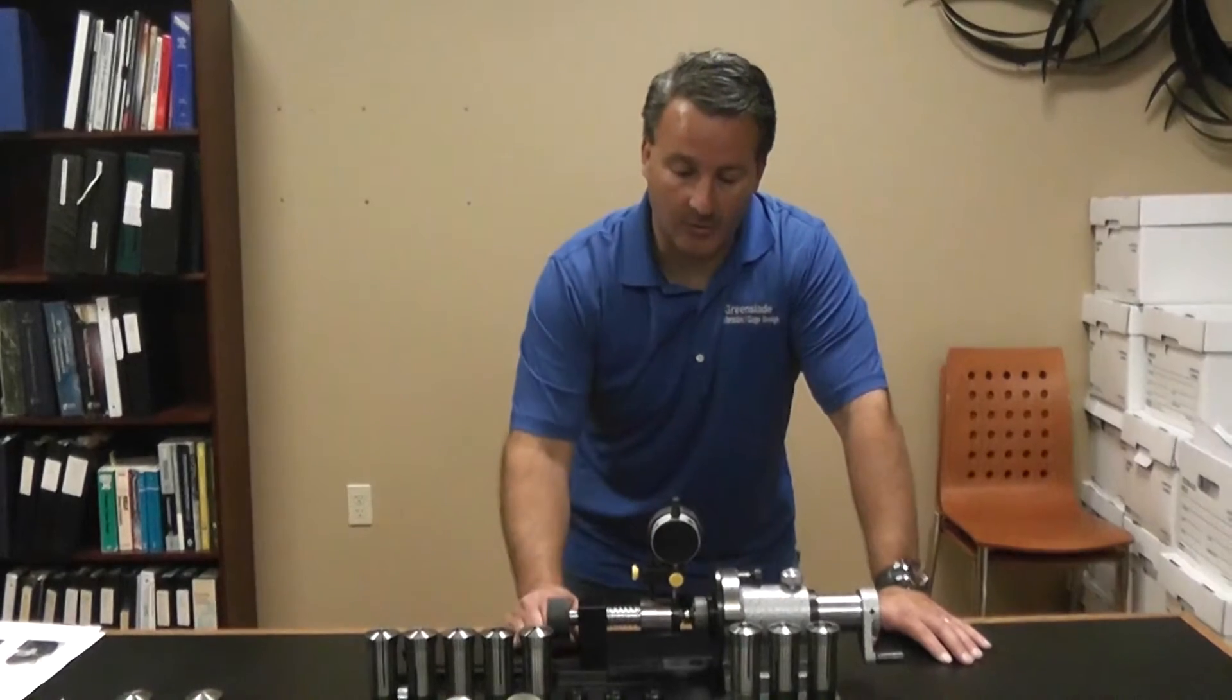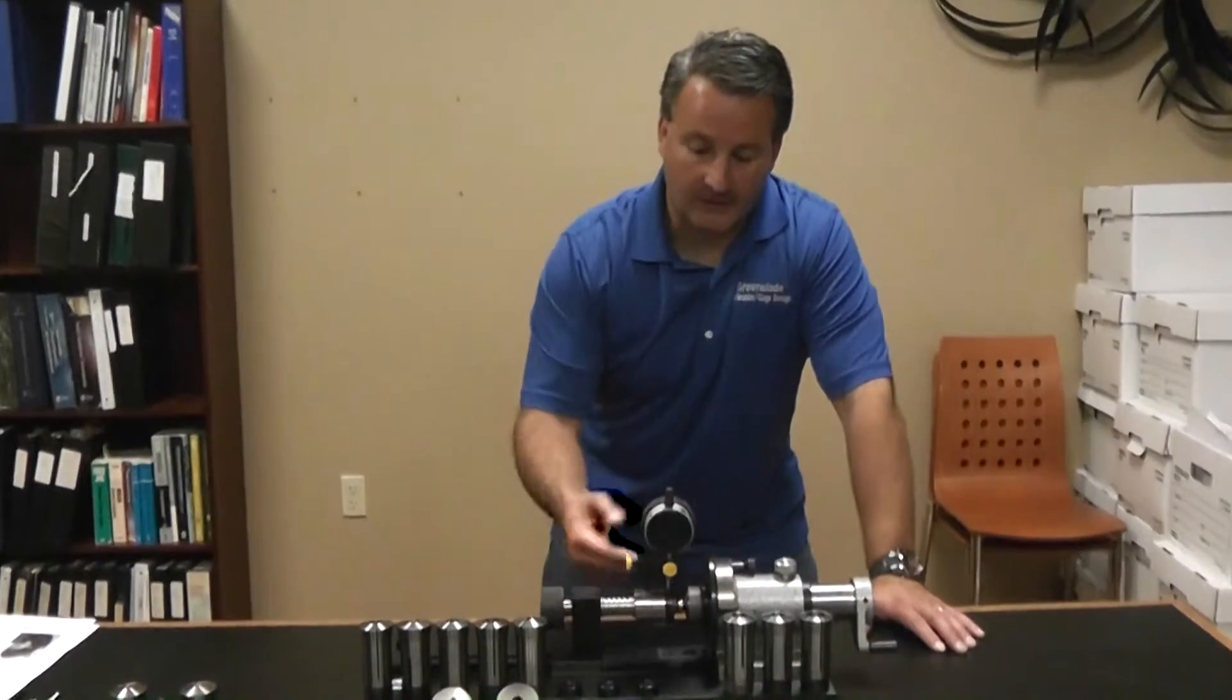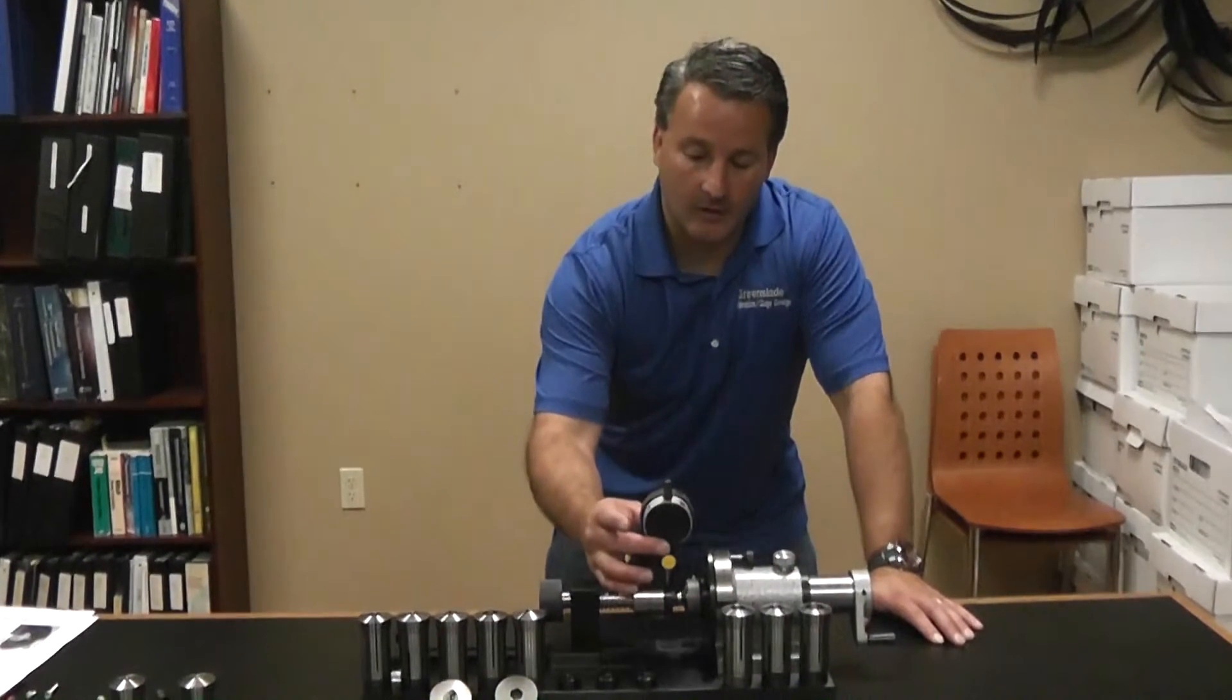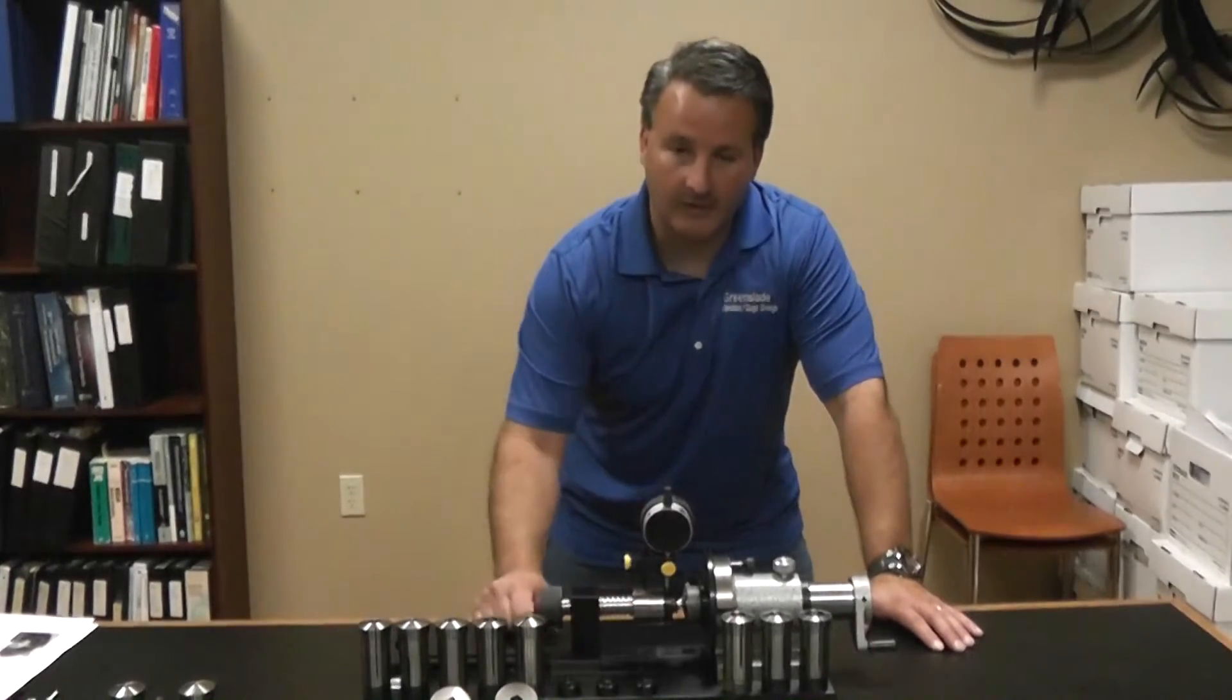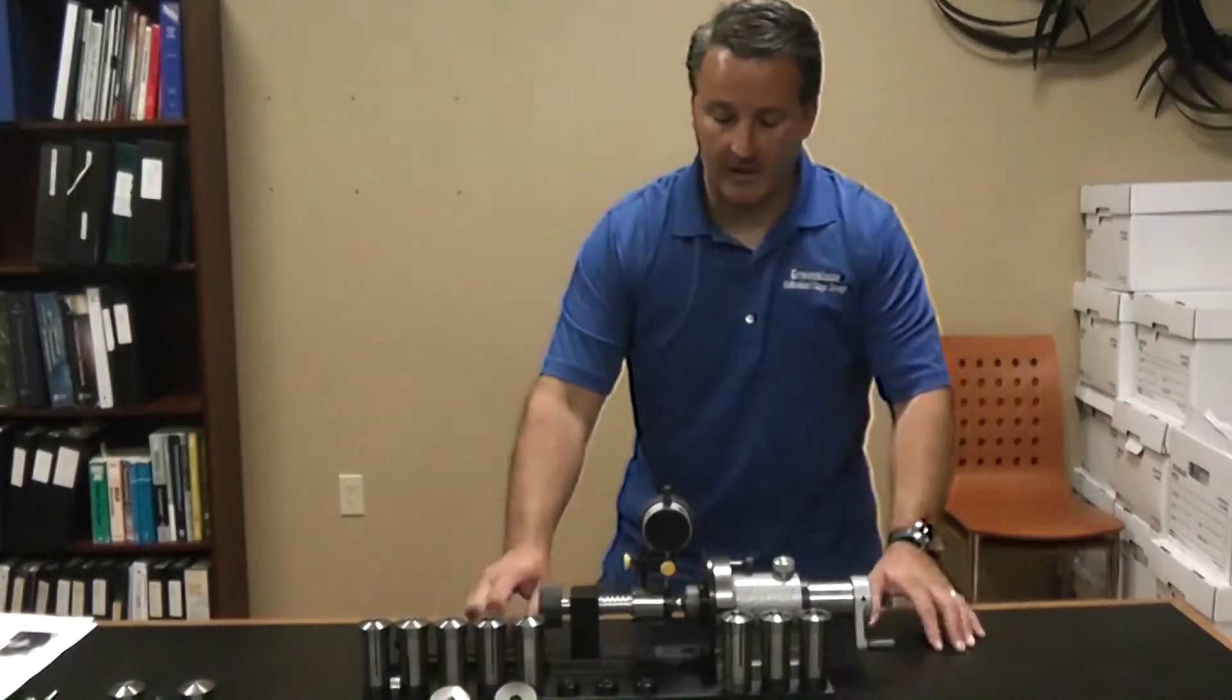Now we are in TIR mode. In order to zero out the indicator where it is right now, we just hit the preset set button once and everything goes to zero.